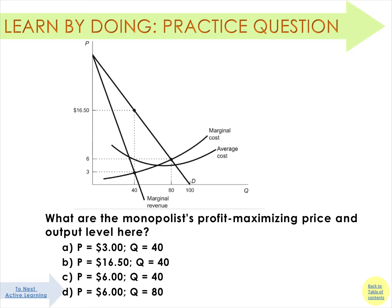Let's try it out. Here's a question: given graphs with a downward sloping demand, marginal revenue below it, and upward sloping marginal cost and average cost curves — what are the monopolist's profit-maximizing price and output? Is it A: P=$3, Q=40; B: P=$16.50, Q=40; C: P=$6, Q=40; or D: P=$6, Q=80? The correct answer is find the quantity where MR crosses MC — that's at Q=40. Then find the price on the demand curve at that quantity, which is $16.50. The answer is B.